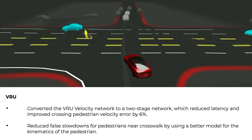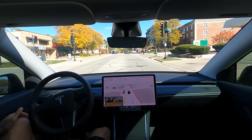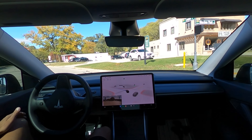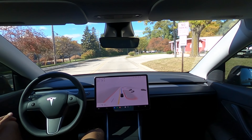The final category is VRUs — vulnerable road users. Tesla converted the VRU velocity network to a two-stage network, which reduced latency and improved crossing pedestrian velocity error by 6%. Tesla also reduced false slowdowns for pedestrians near crosswalks by using a better model for pedestrian kinematics. Anything reducing false slowdowns in a safe way makes the product a lot better. That's everything in 10.69.3 — definitely seems like a significant update. Hopefully employee testing goes well and people outside of Tesla can start to get this version over the next week or so.